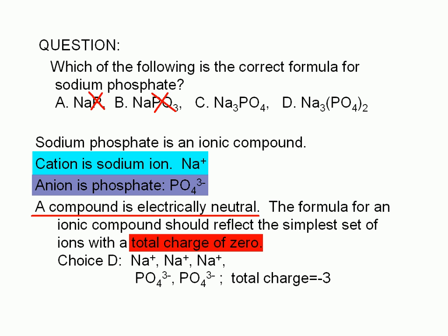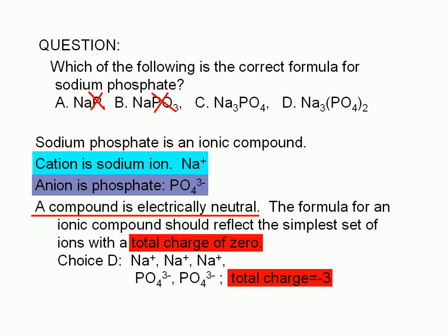Let's examine choice D. The subscript for sodium is 3, and the entire formula for phosphate has a subscript of 2. Each sodium ion has a charge of plus 1, and each phosphate ion has a charge of negative 3. So: positive 1 plus positive 1 plus positive 1 plus negative 3 plus negative 3 equals negative 3. Therefore, the total charge implied in the formula is negative 3, and choice D is wrong.